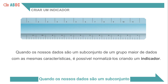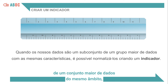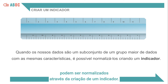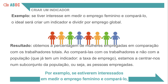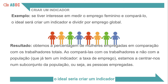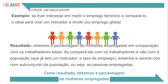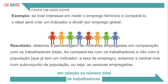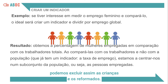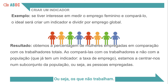When our data is a subset of a larger group of data relating to the same scope, they can be normalised by creating an indicator. For example, if you are interested in measuring female employment and comparing it, the ideal would be to create an indicator that divides the number of female workers by total employment. As a result, we have the percentage of employed women out of the total number of workers, by not comparing them as a proportion of the entire population. We can thus exclude children and retirees — those who do not work.